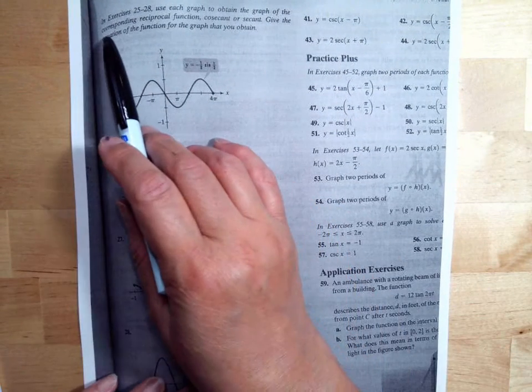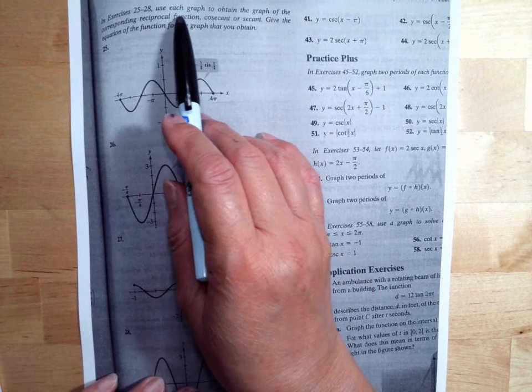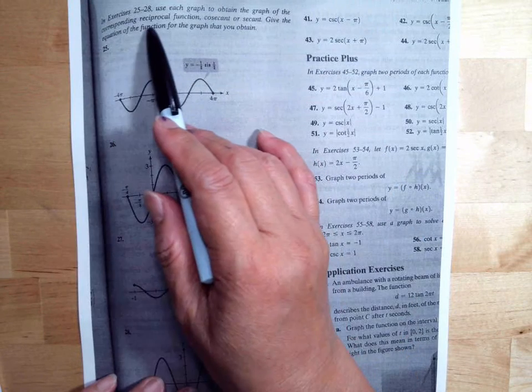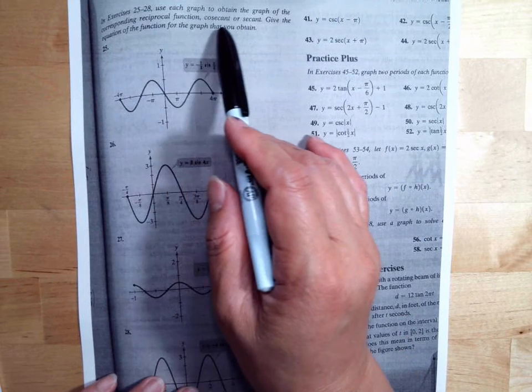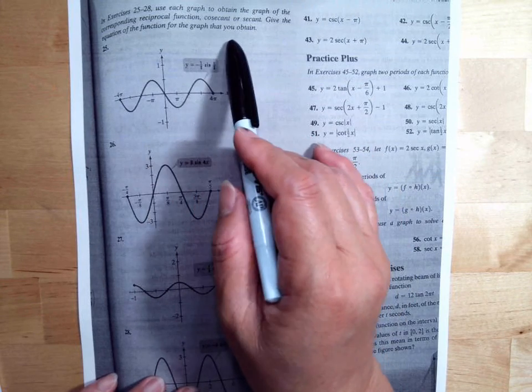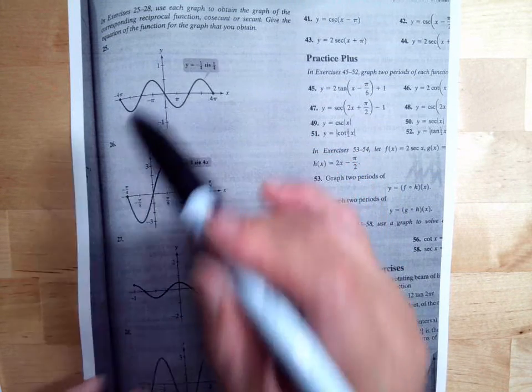So here we need to use each graph to obtain the graph of the corresponding reciprocal function. Cosecant or secant, give the equation of the function for the graph that you obtain.